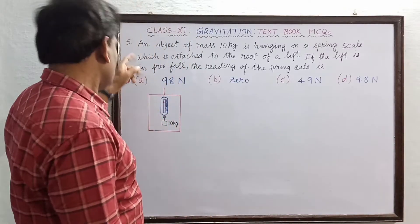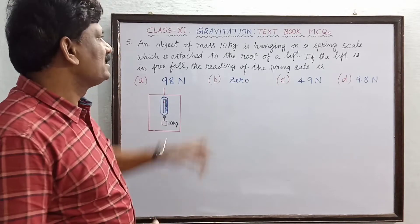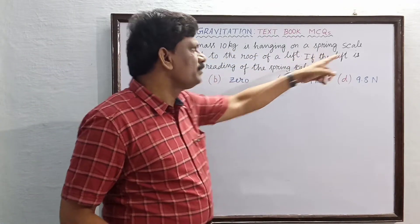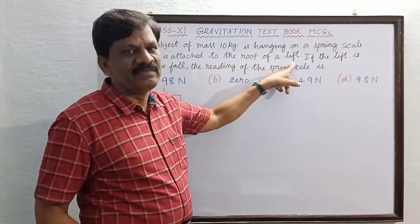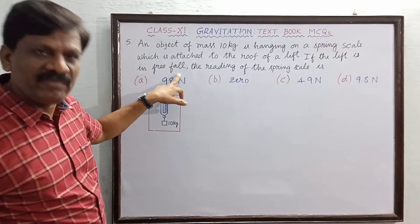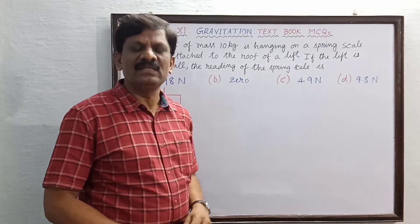Hi students, MCQ number 5. An object of mass 10 kg is hanging on a spring scale which is attached to the roof of a lift. If the lift is in free fall, then the reading of the spring scale will be is the question.